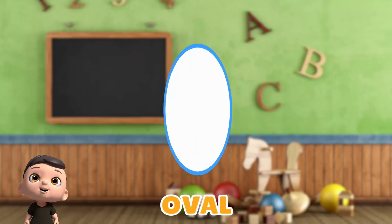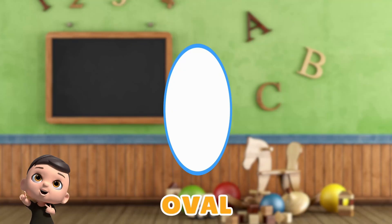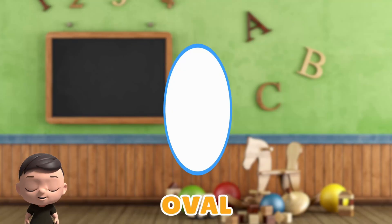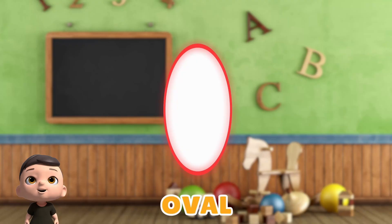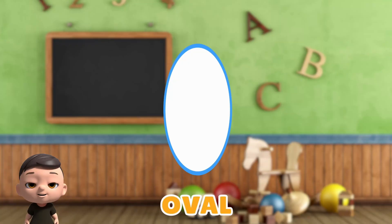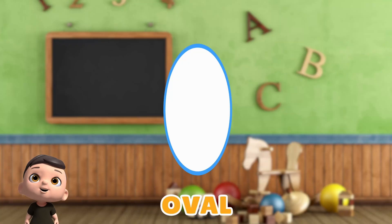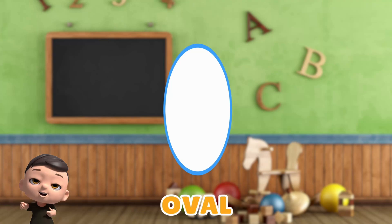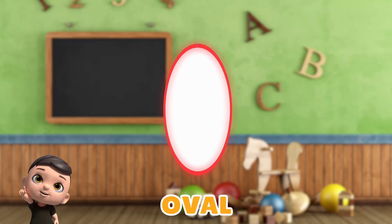This is an oval. Let's see how many sides an oval has. No straight sides here. Oval has no straight sides. Now let's count the vertices of an oval. There are none. Oval has 0 vertices. So we can say that an oval has no sides and no vertices. An oval is a stretched out round shape, kind of like an egg.